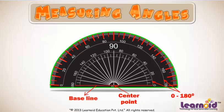There is a straight line at the base of the protractor called the baseline.